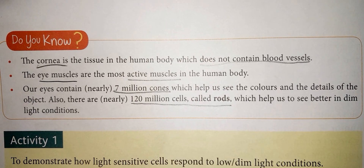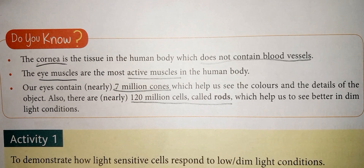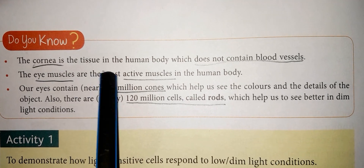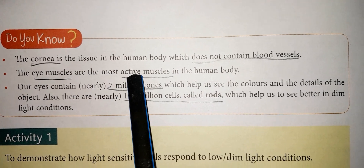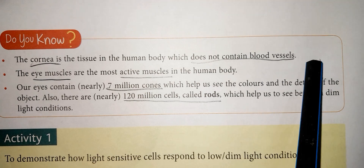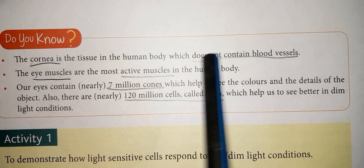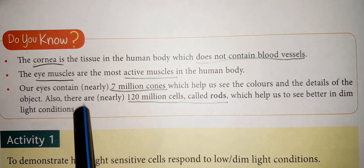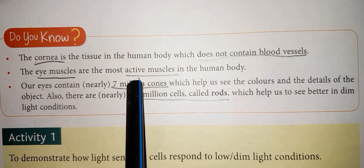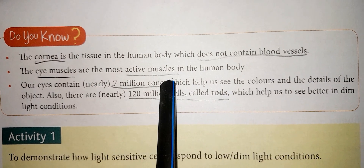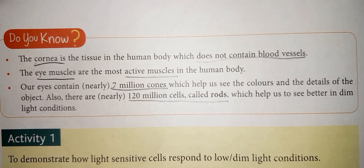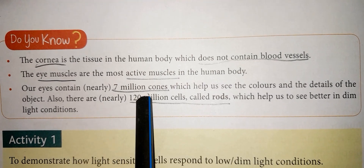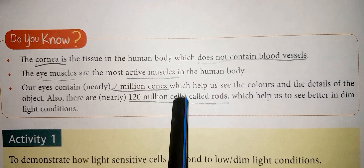Now come to the Do You Know section. The cornea is the tissue in the human body which does not contain blood vessels. You have to remember this because questions arise from the Do You Know section. The eye muscles are the most active muscles in the human body, and our eyes contain nearly 7 million cones.